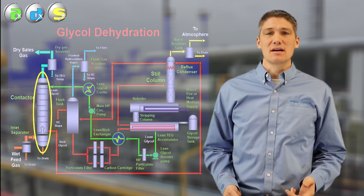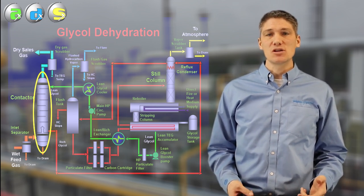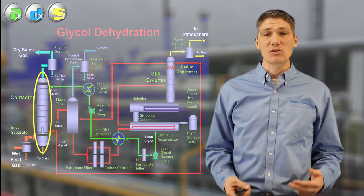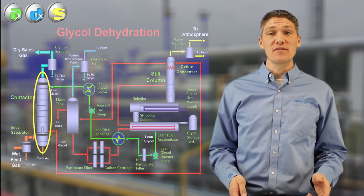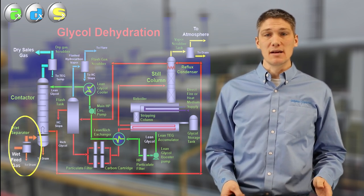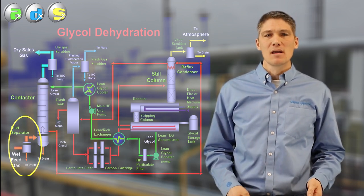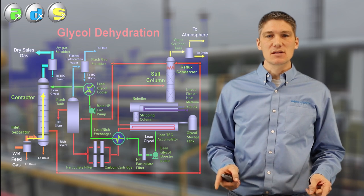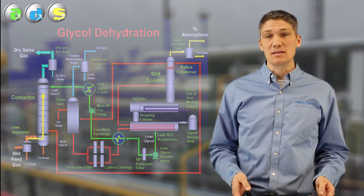Here we have a conventional TEG dehydrator system. What stands out here as a major difference from the EG refrigeration system is a primary piece of equipment, the contactor. And this is where the dehydration of the wet feed gas happens. First, the gas should always go through an inlet separator where free water, solids, and liquid hydrocarbons can be removed. From there, the wet feed gas enters the contactor bottoms where it travels up the column on its path to being dehydrated.